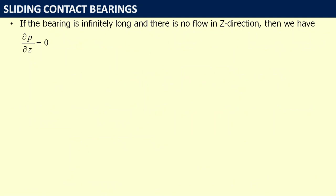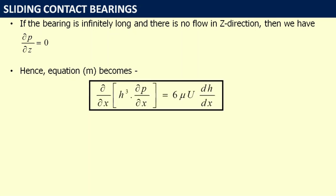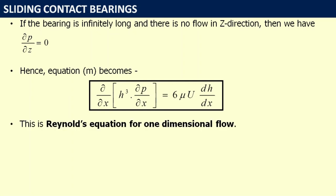If the bearing is infinitely long and there is no flow in the z direction, then del P/del z = 0. Substituting into equation M gives: del/del x (h³ × del P/del x) = 6mu × U × dh/dx. This is Reynolds equation for one-dimensional flow.